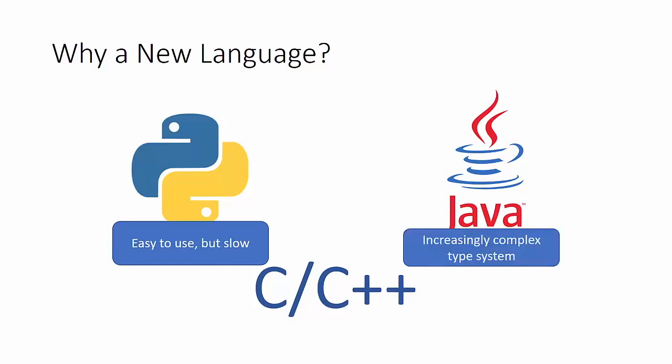Java is very quick, but its type system has become increasingly complex over time. This is a natural trend that a lot of languages go through — they start out very simple, but as additional use cases and features are layered in, it becomes increasingly more difficult to navigate.